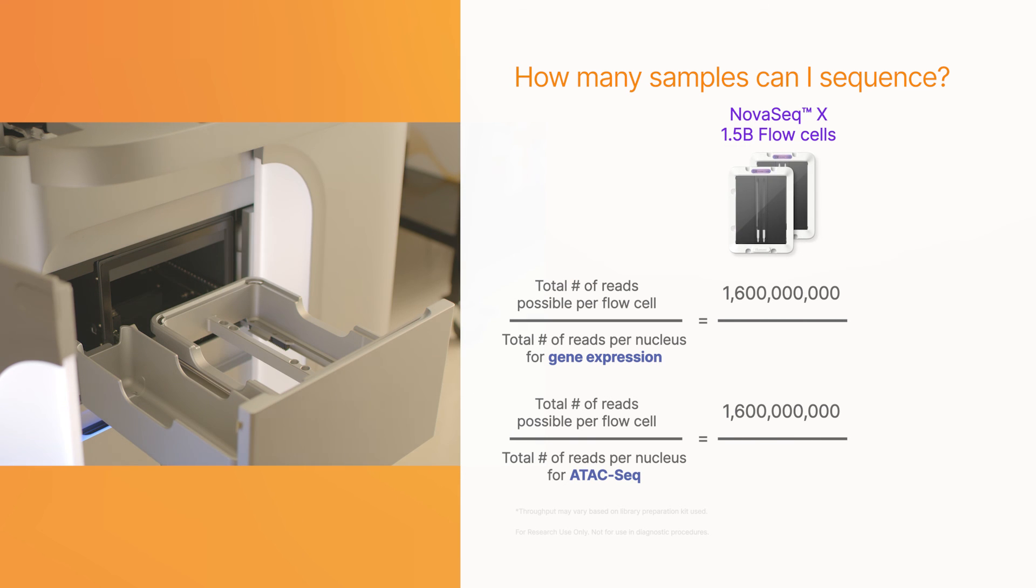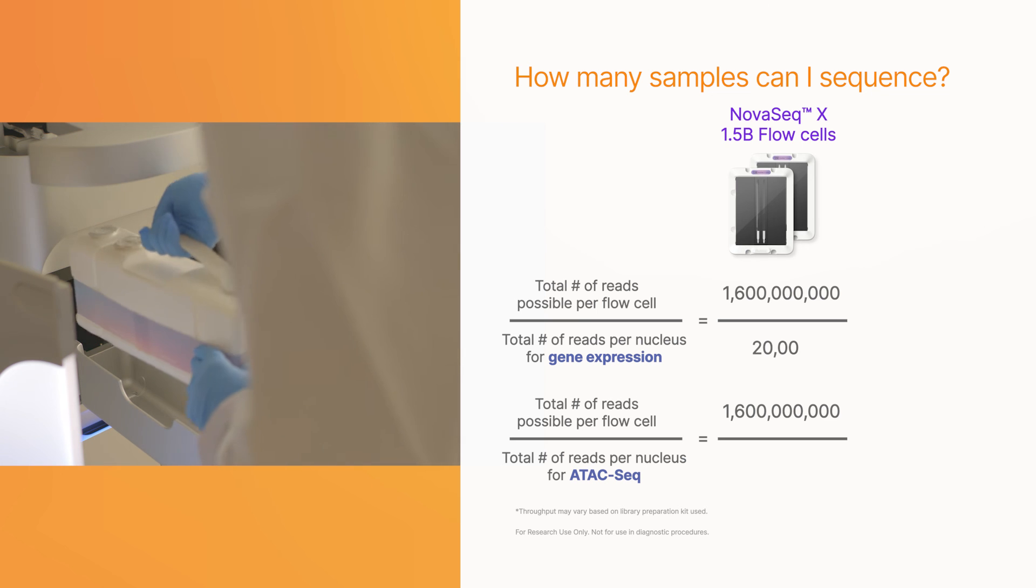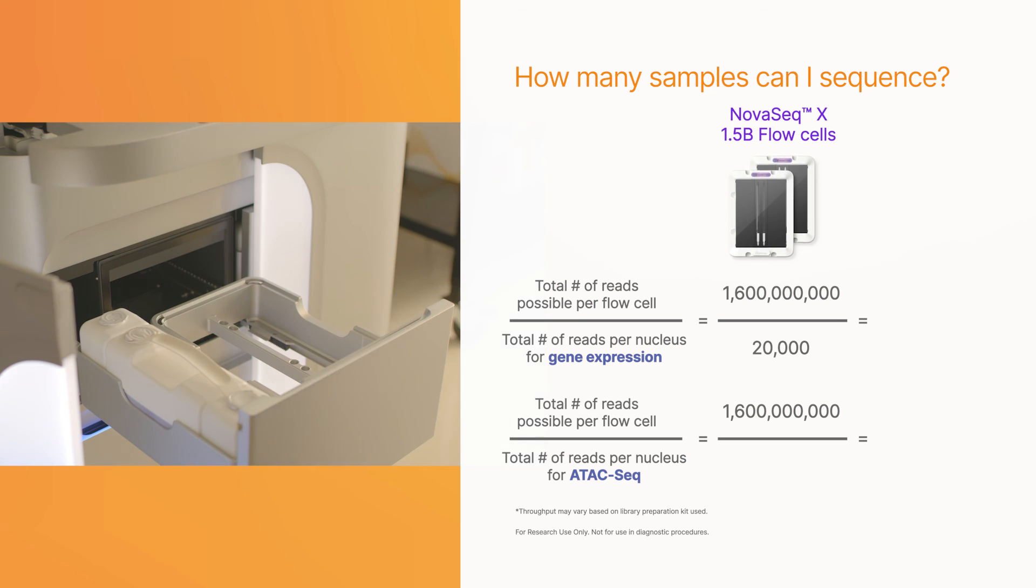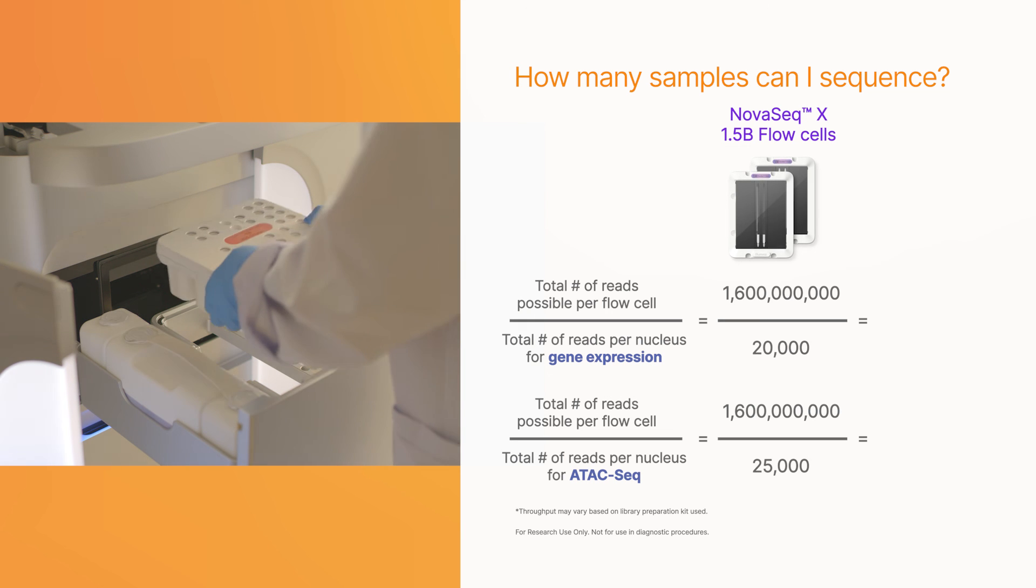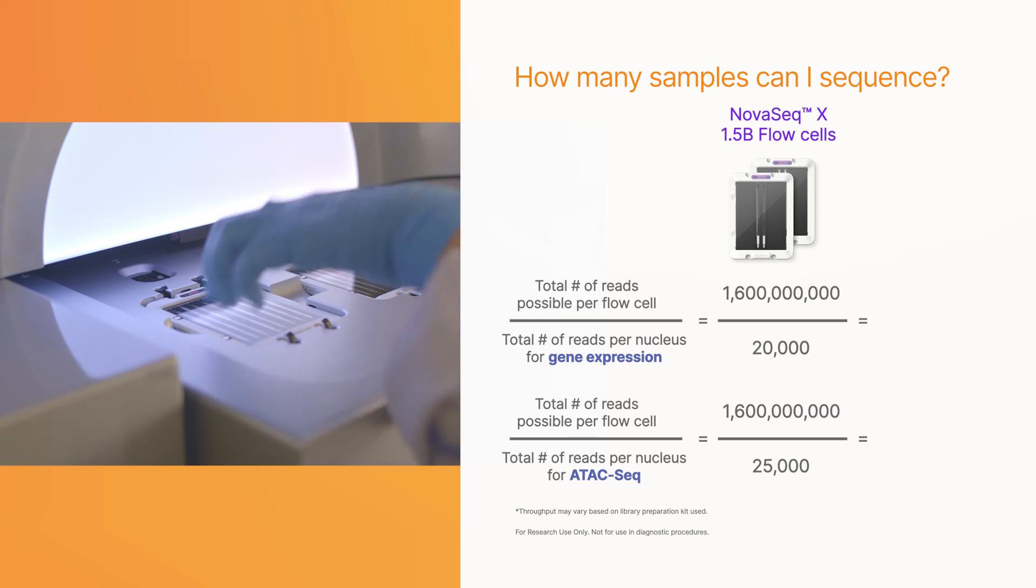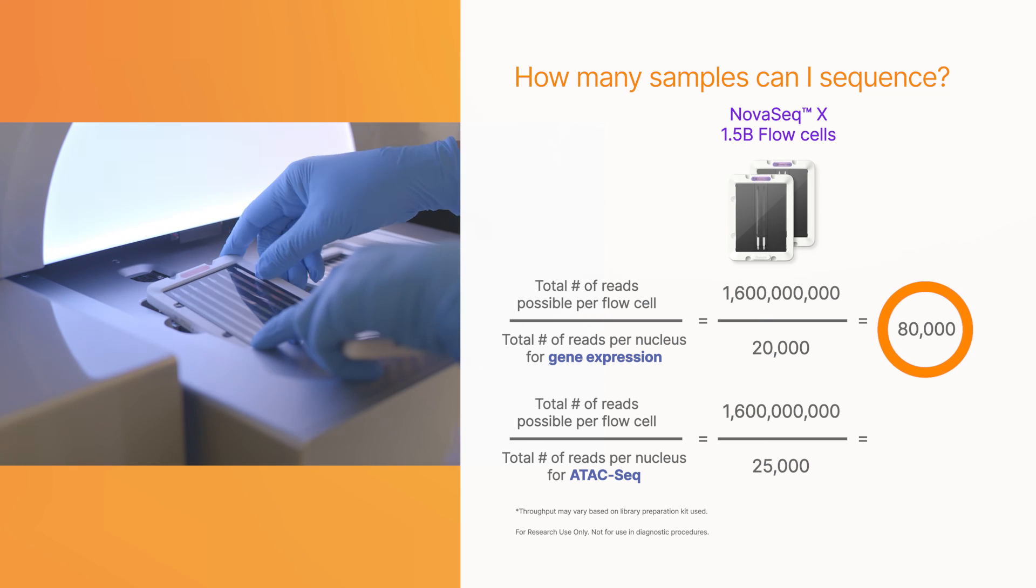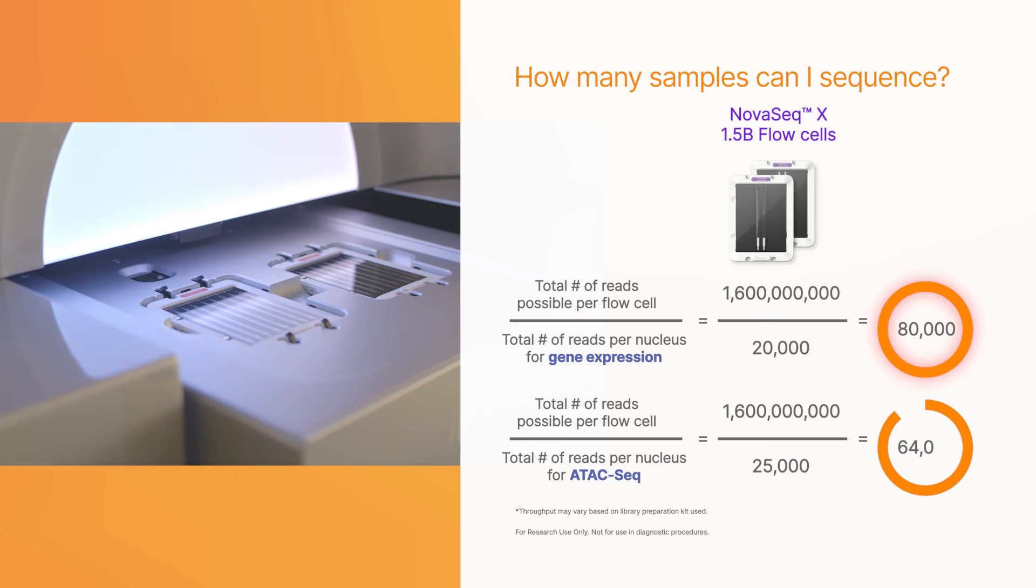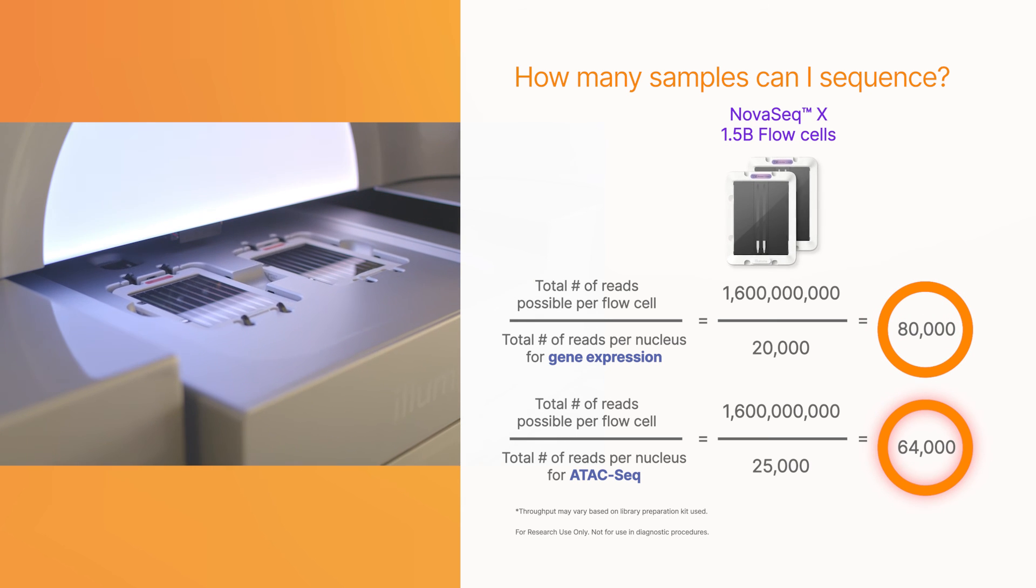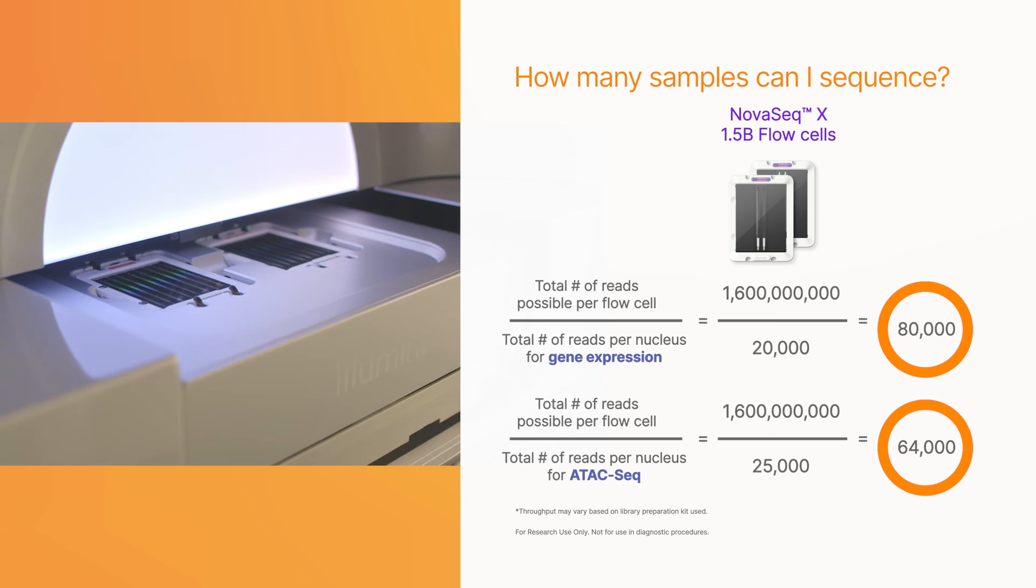For this experiment, 10X recommends at least 20,000 reads per nucleus for gene expression and 25,000 reads per nucleus for ATAC-seq. This means that you can profile gene expression in 80,000 nuclei and perform ATAC-seq on 64,000 nuclei on two 1.5b NovaSeq-X flow cells.